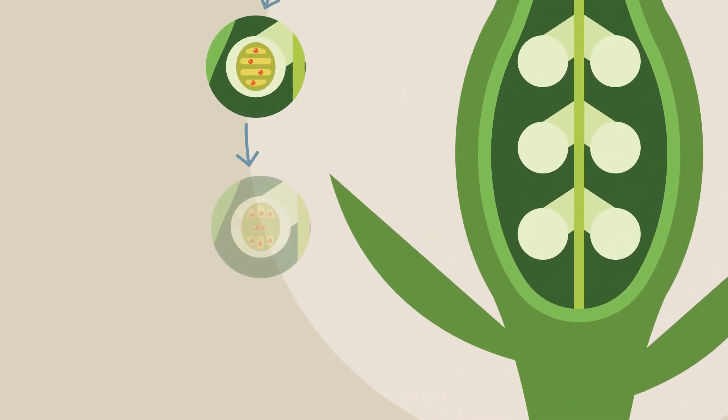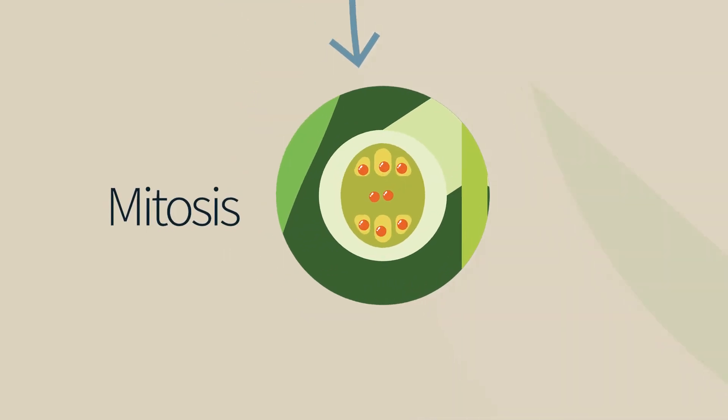Subsequently, each of the four cells divides mitotically into two cells. We have now eight haploid cells.